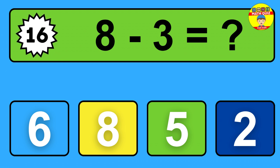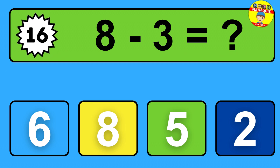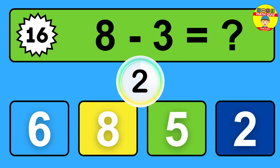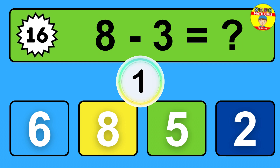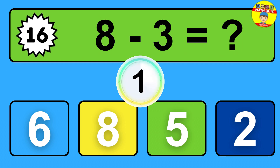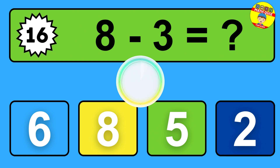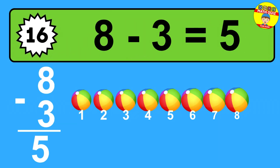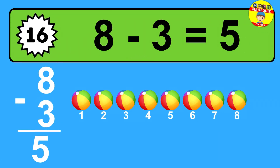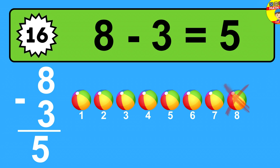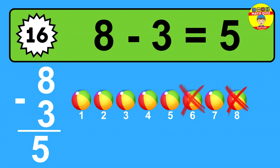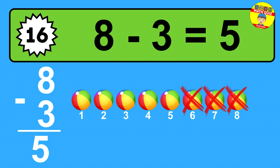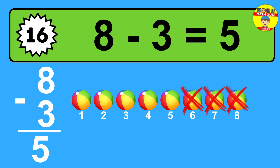Question sixteen: eight minus three equals what? The answer is eight minus three is five. Let's count it: one, two, three, four, five.